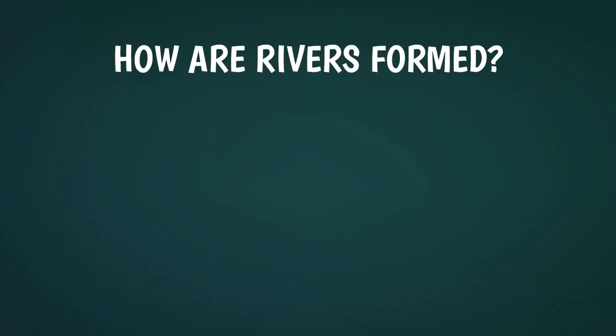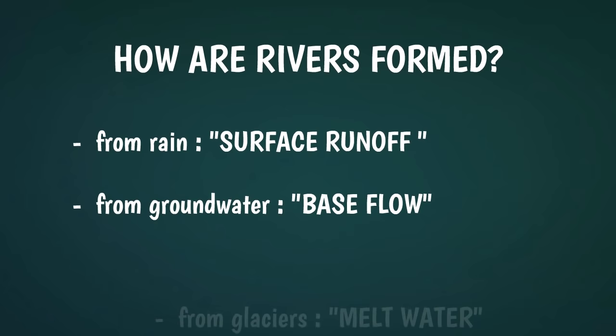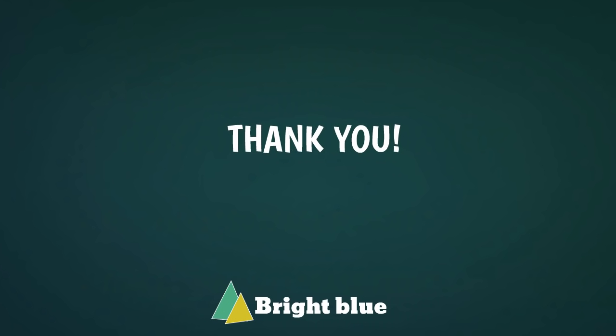So, to summarize where the water in rivers come from, some of the water reaches the river as surface runoff, when it rains or shortly afterwards. Some of the water comes from groundwater reservoirs known as aquifers. And finally, some of the water comes from melting of snow and ice. Thank you for your attention.